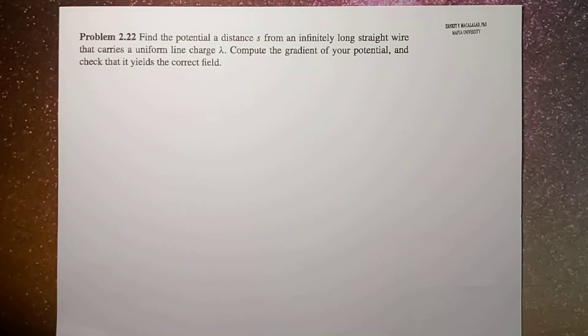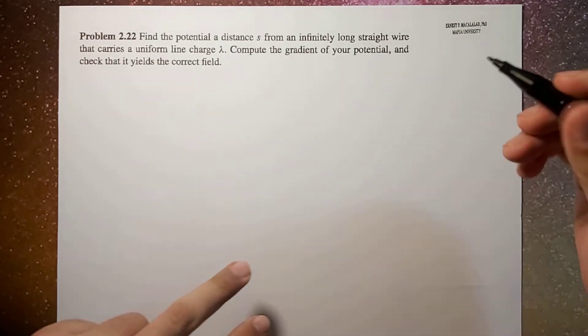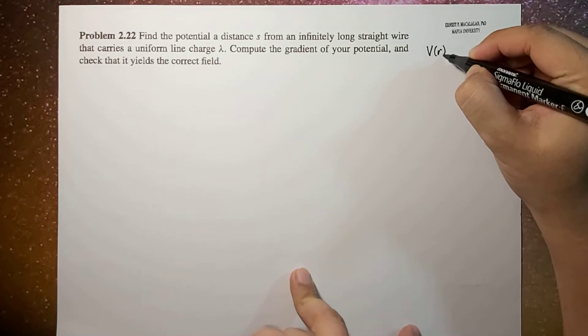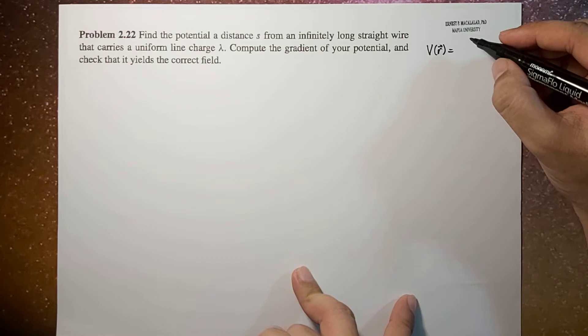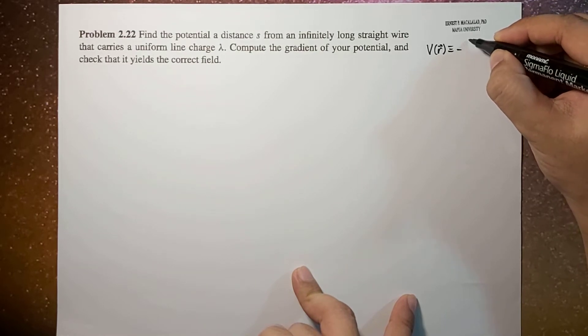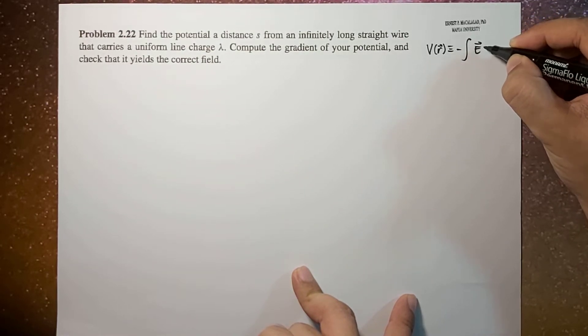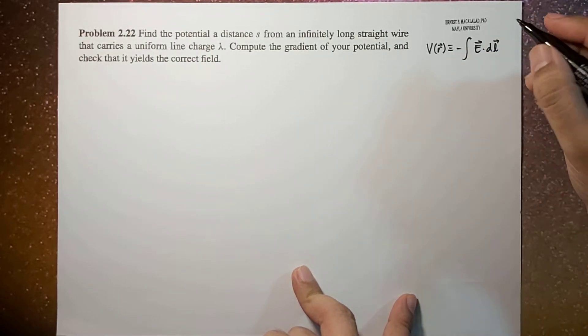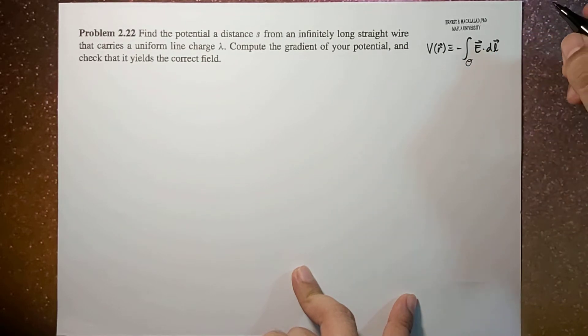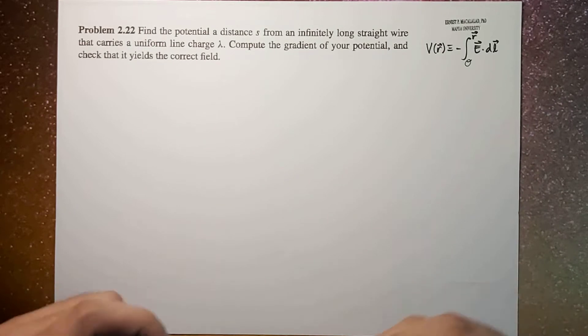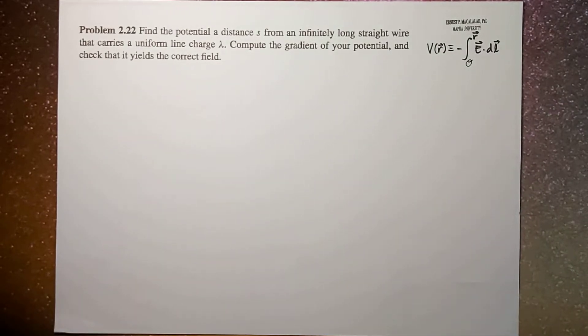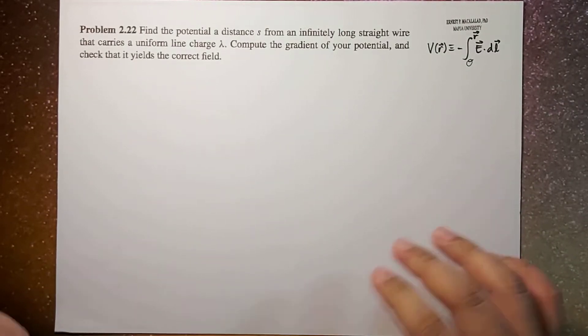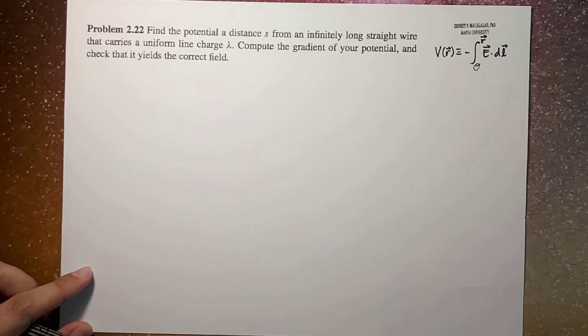Just a brief review: the potential at a certain point is given by or defined as negative of the line integral of the electric field dot dl. The limits of integration will be from some reference point O to the point where you want to calculate your potential.